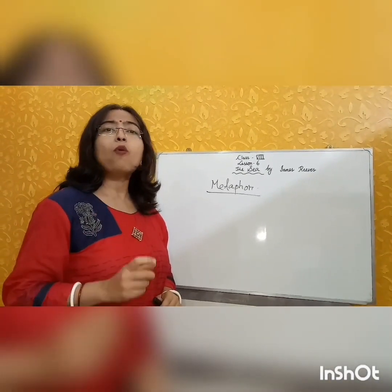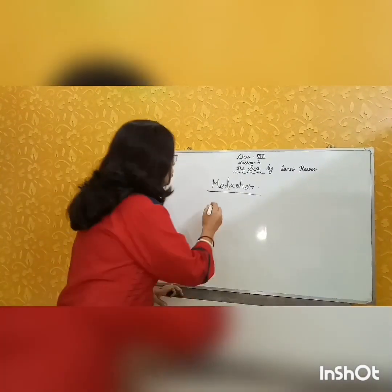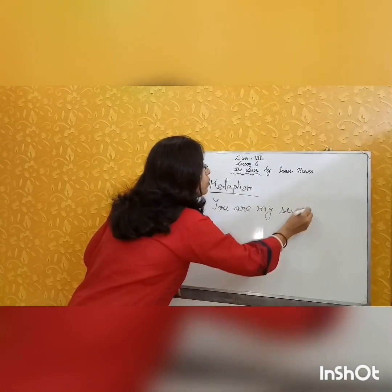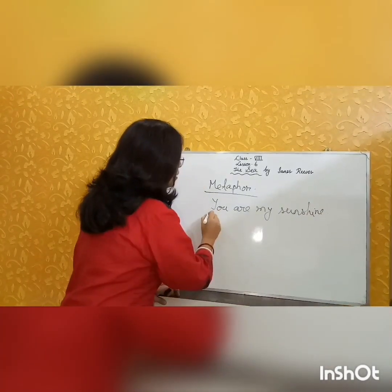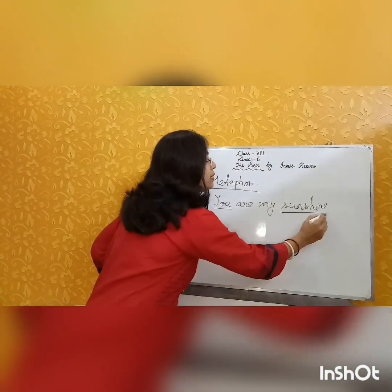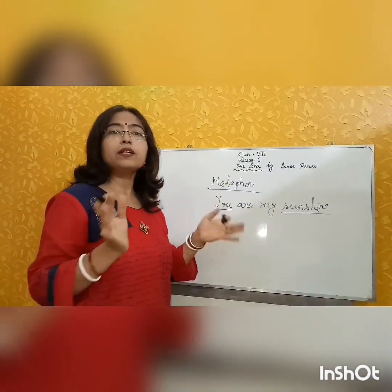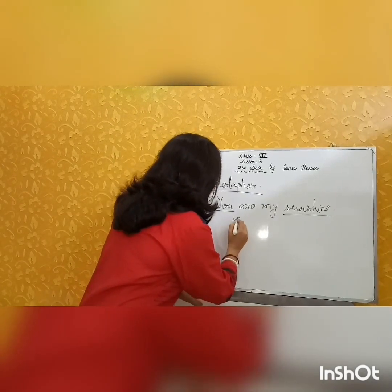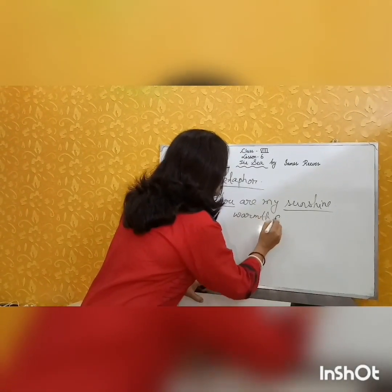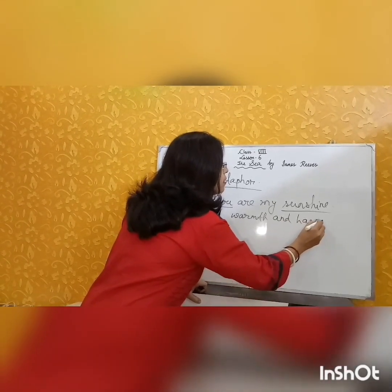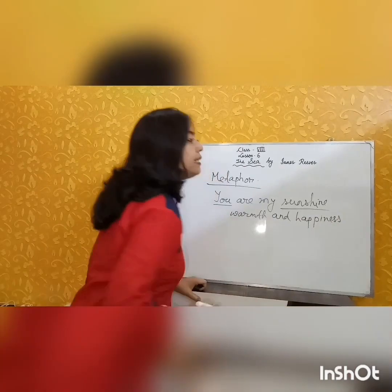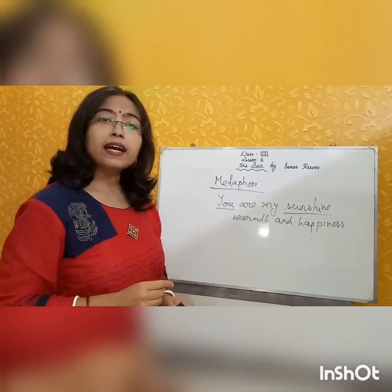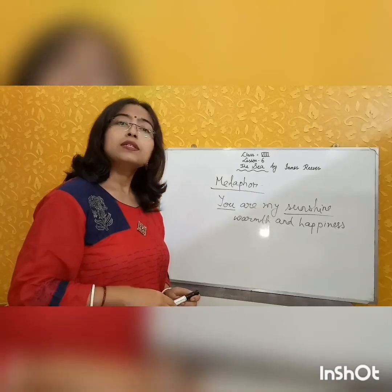There is a point of similarity. For example, 'you are my sunshine.' Here, you — the person — and sunshine, these two objects are compared with each other. But what is the point of similarity? The point of similarity is the sun's warmth and happiness. As the sun gives warmth and happiness to someone's day, similarly, you also provide warmth and happiness to someone.